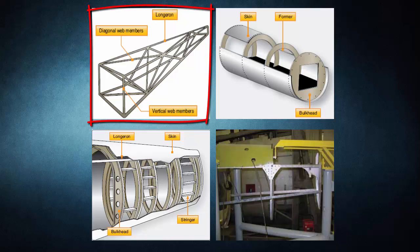A truss is a rigid framework made up of members such as beams, struts, and bars to resist deformation by applied loads. The truss framed fuselage is generally covered with fabric. The truss type fuselage frame is usually constructed of steel tubing welded together so that all members can carry both tension and compression loads. In some light single-engine aircraft, truss fuselage frames may be constructed of aluminum alloy and may be riveted or bolted into one piece, with cross-bracing achieved using solid rods or tubes.